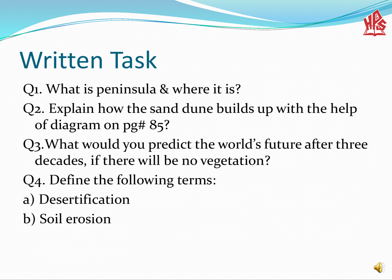At the end of the discussion, you are supposed to do some written tasks in your notebooks. Question one: What is a peninsula and where is it? Explain how sand dunes build up with the help of a diagram on page 85. Next: What would you predict about the world's future after three decades — that is, 30 years — if there is no vegetation? Finally, define the following terms: desertification and soil erosion. Allah Hafiz.